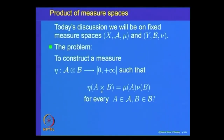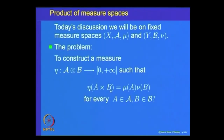This requirement that η(A×B) = μ(A)·ν(B) fixes the measure on rectangles. Since measurable rectangles form a semi-algebra and generate the sigma algebra A⊗B, we can use our extension theory to extend η from the semi-algebra of all rectangles to the full sigma algebra A⊗B.